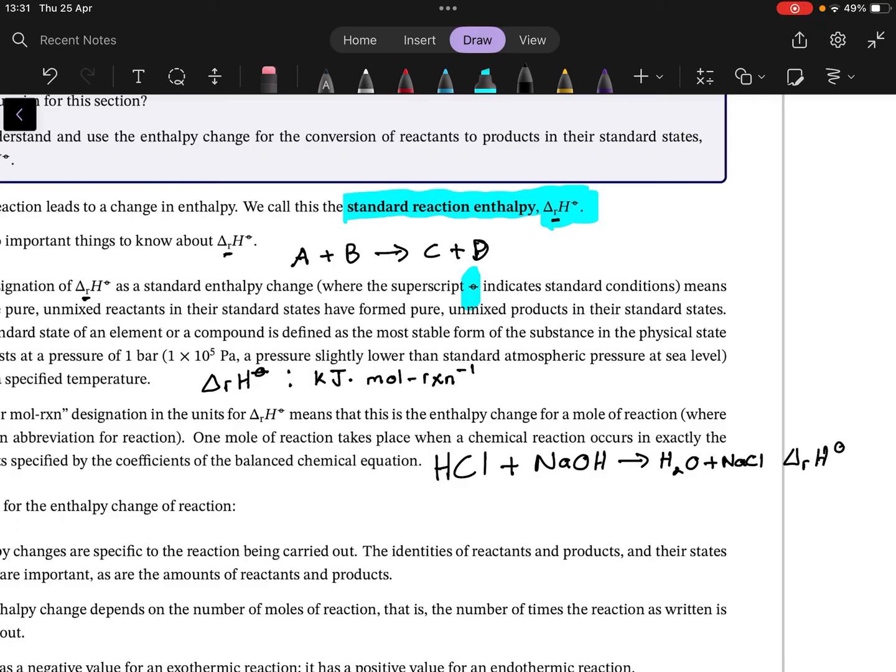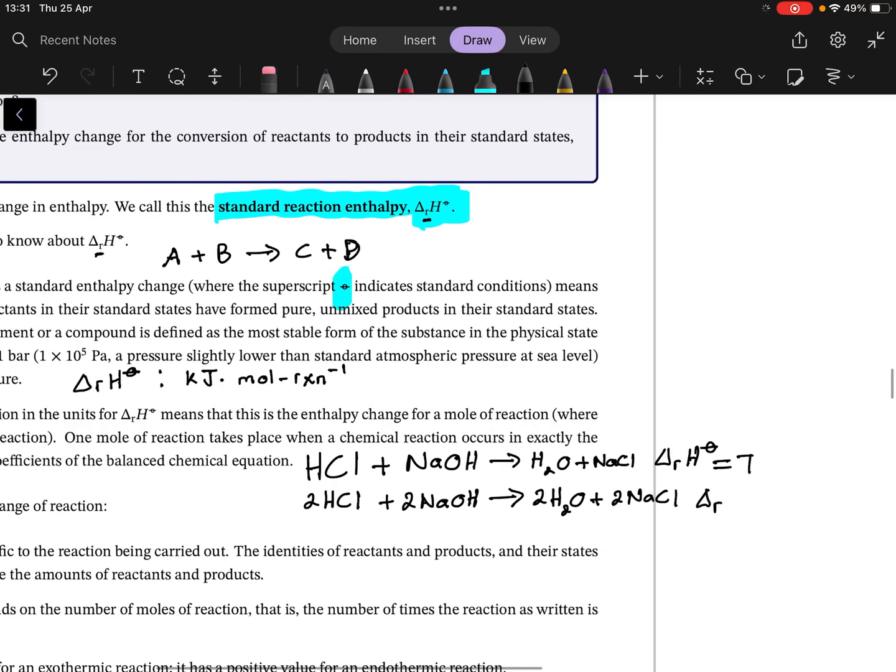For example, delta rH° could be 7 for this reaction. If you increase the stoichiometry—say 2HCl + 2NaOH → 2H₂O + 2NaCl—the delta rH changes by the same factor. Multiply by two, so it becomes 14.